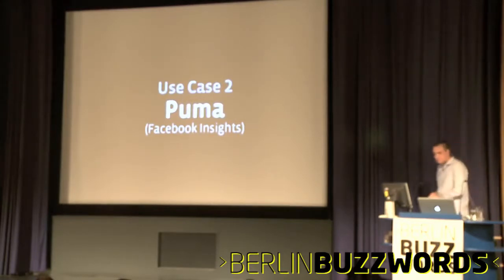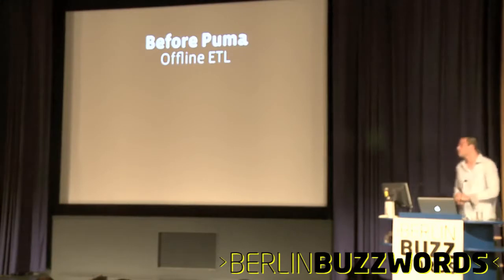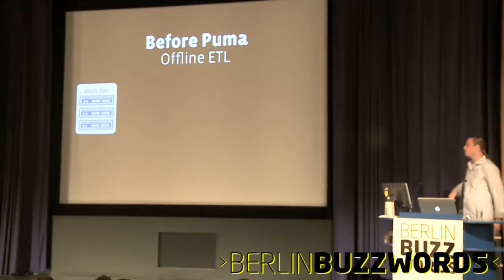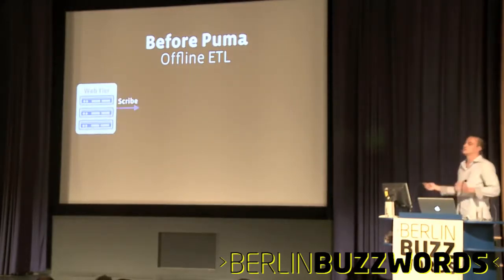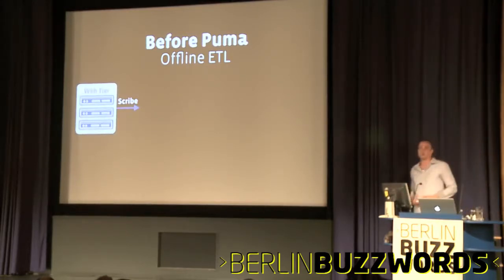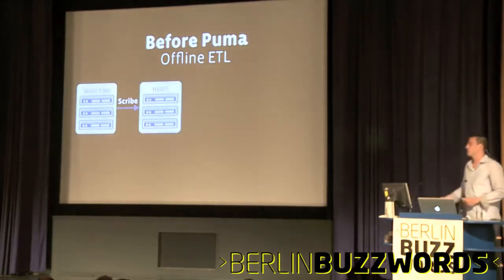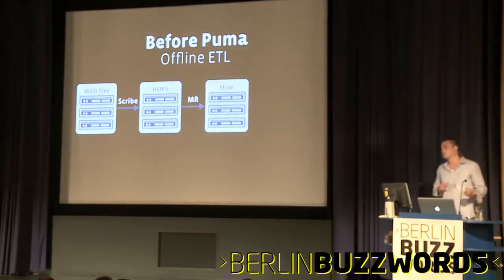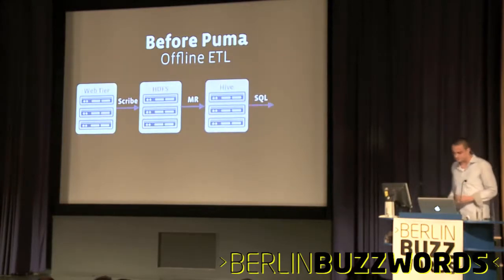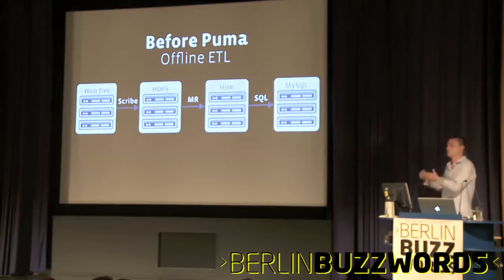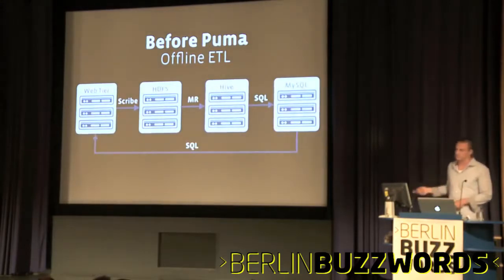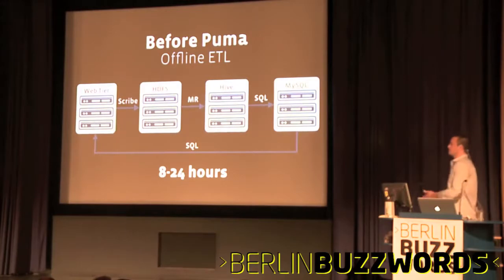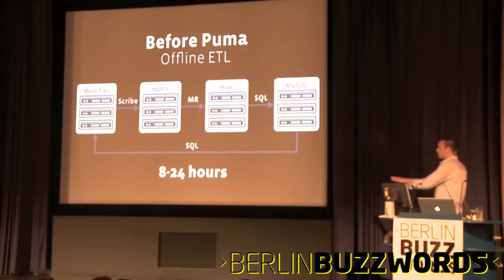Use case two: Puma. Puma is a system that was replacing an existing system — it's basically an ETL system. This is what it used to look like: at the front you have the web tier, which emits a ton of logs — all different kinds of impression information, tracking information. We're using Scribe to write all that into HDFS. Then via MapReduce we're creating Hive tables, running a bunch of analytics on top of that, and using SQL from the Hive output to store rollups. Very typical ETL pipeline. The issue is this is about an 8 to 24 hour pipeline, so if I write something on the web tier and I want to read the transformations and rollups off that data, it's going to be about 8 to 24 hours.